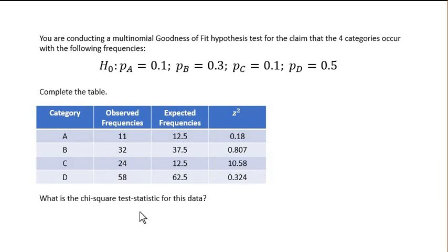The chi-squared test statistic that we're looking for is actually the sum of these Z squared values. So the chi-squared test statistic is just 0.18 plus 0.807 plus 10.58 plus 0.324, which is 11.891. That is my chi-squared test statistic.